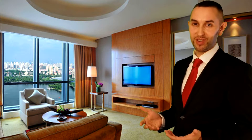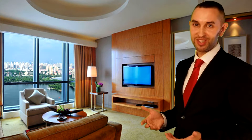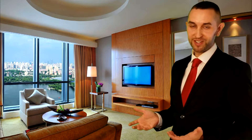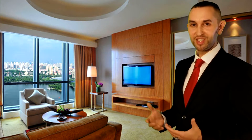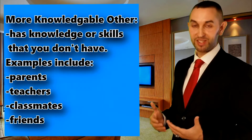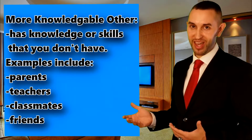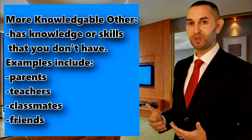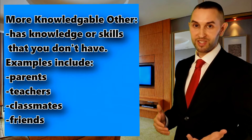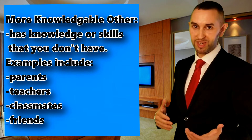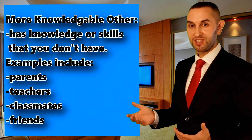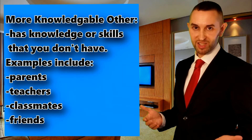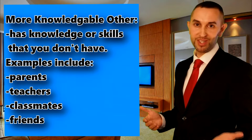So let's look at three of Vygotsky's theories. First, we have the more knowledgeable other. This is simply a person who has knowledge or skills that we don't have. For example, this could be parents, or it could be teachers, or it could be one of your peers, such as a classmate or one of your friends.